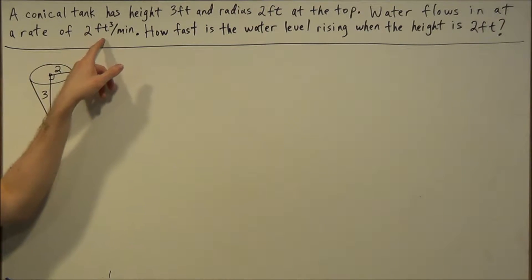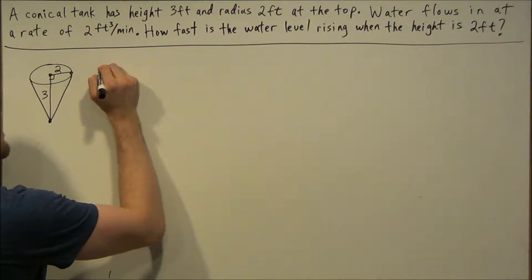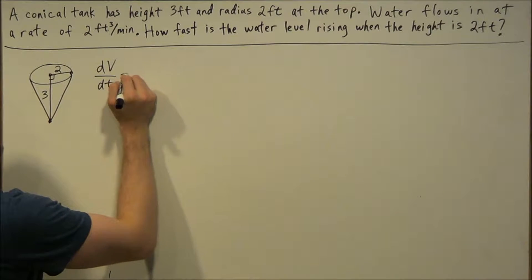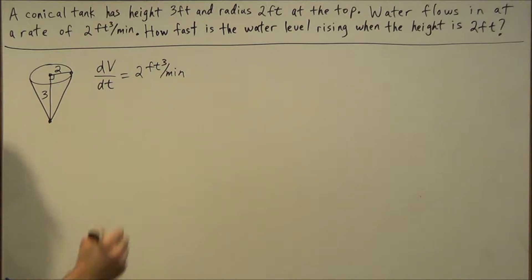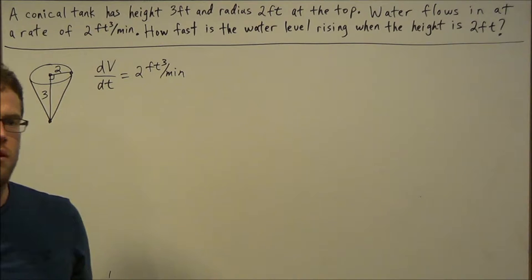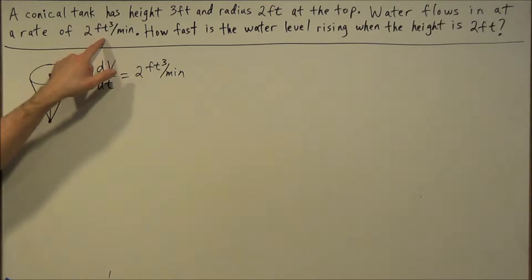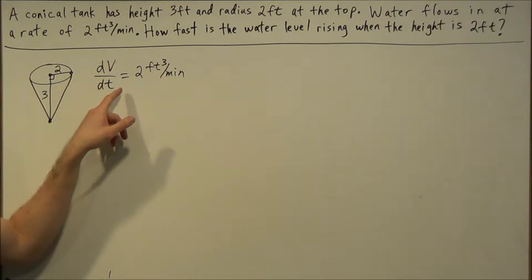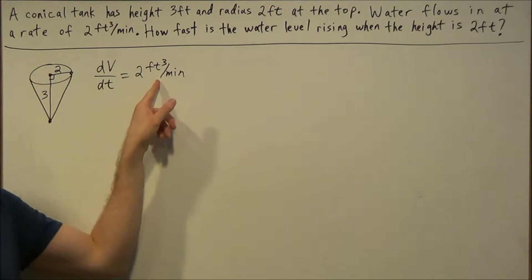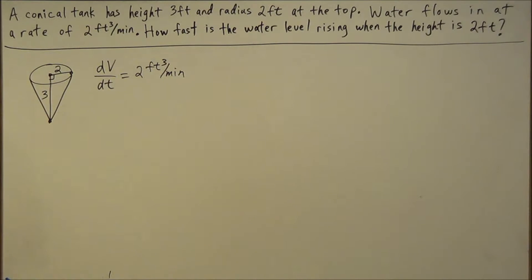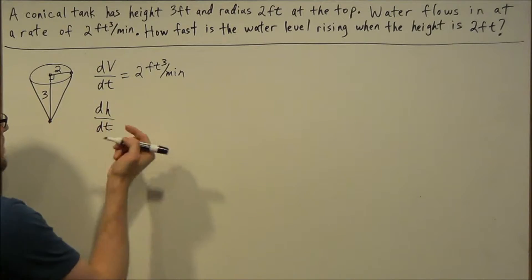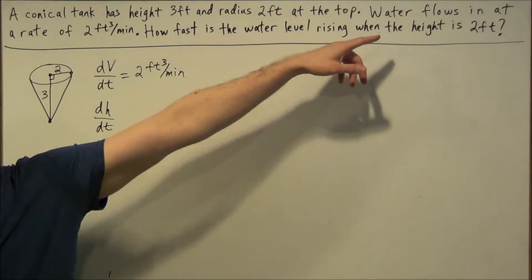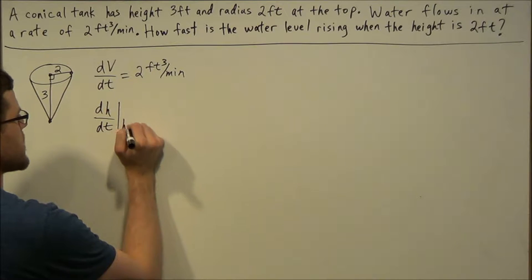Water flows in at a rate of 2 cubic feet per minute. That tells us that dV/dt is equal to 2 cubic feet per minute. Just know that when water flows in, that affects the volume of the cone, and since the rate here is expressed in cubic feet, feet to the third power, volume is a three-dimensional concept. So we have to assign dV/dt to this rate here. The question is asking us how fast is the water level rising, so we're looking for dh/dt, which is basically how fast the height is changing when the height is 2 feet, so at h equals 2.